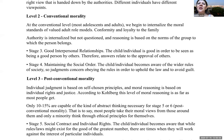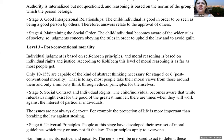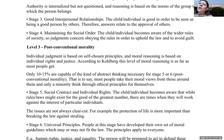Level two, conventional morality, applies to most adolescents and adults: moral standards of valued adult role models are internalized. Conformity and loyalty to the family occurs. Authority is internalized but not questioned, and reasoning is based on norms of the group. Stage three is good interpersonal relationships — the person is good in order to be seen as a good person by others. Stage four is maintaining social order — the person becomes aware of wider societal rules, with judgments concerning obeying laws to uphold order and avoid guilt.